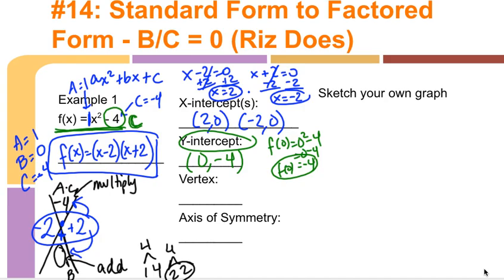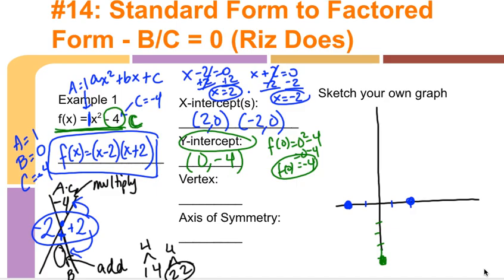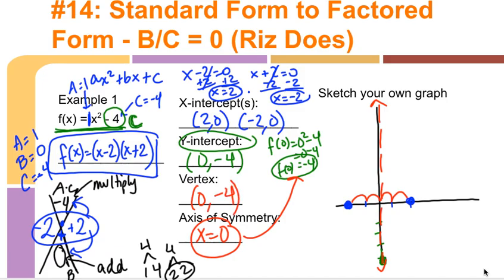Sketching the graph: plot x-intercepts at (2, 0) and (-2, 0), and the y-intercept at (0, -4). Because the y-intercept is the midpoint between the two x-intercepts, the axis of symmetry is x = 0. That means the vertex is the same as the y-intercept, (0, -4). Plot those three points and draw your parabola.